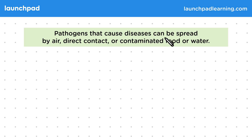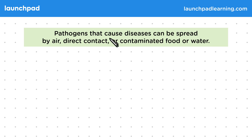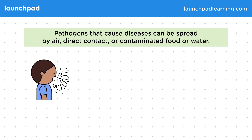Pathogens that cause diseases can be spread by air, direct contact, or contaminated food or water. Remember, a pathogen is an organism that causes disease. There are a variety of routes through which pathogens can get into plants or animals.